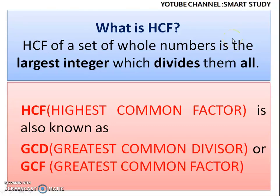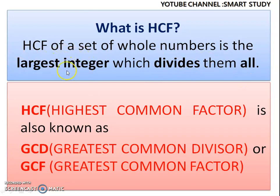Before discussing the methods to find HCF, let us see what HCF is. HCF is known as highest common factor, or greatest common divisor GCD, or greatest common factor GCF. The common word in all these is 'highest' or 'greatest.' HCF of a set of whole numbers is the largest integer which divides them all.